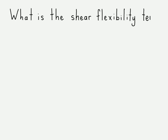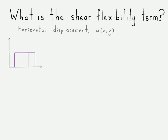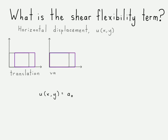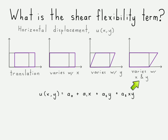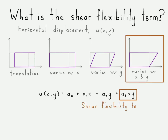What is the shear flexibility term? If we look at the horizontal displacement of an element — using a quadrilateral element — we can have translation, the same as with a triangle element, and displacement that varies with x, just like a triangle element. For a linear triangle element, those are all the possible methods of deformation. But with a quadrilateral element, we can have something that varies with both x and y, and that gives us the shear flexibility term that is not available in the constant strain triangle element.